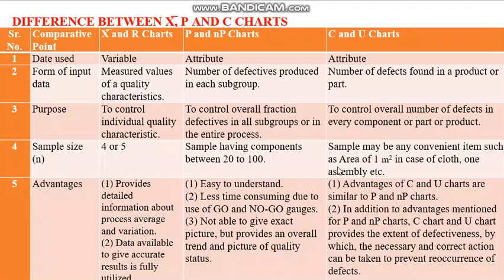The advantages of X-bar and R charts are that they provide detailed information — exact values even to decimal and micron level — about the process average and variation. All available data is fully utilized to give accurate results.